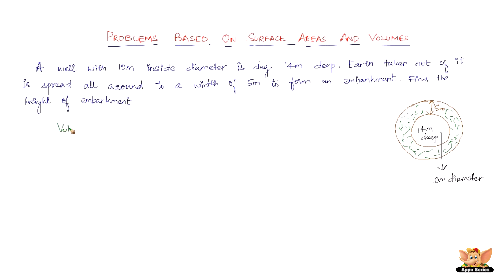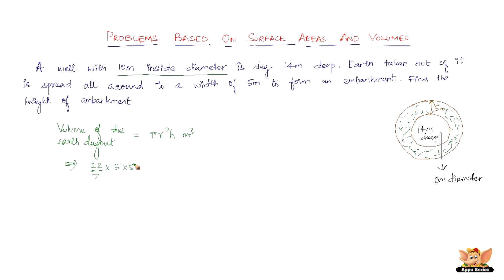The volume of the earth dug out is pi r squared h cubic meters. We use this formula because the well is cylindrical in shape. So that is 22/7 times r squared - the radius is 5 since the diameter is 10 meters - times 5 times 5, and the depth is 14 meters. Solving this gives 1100 cubic meters.